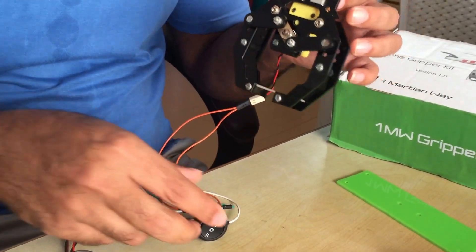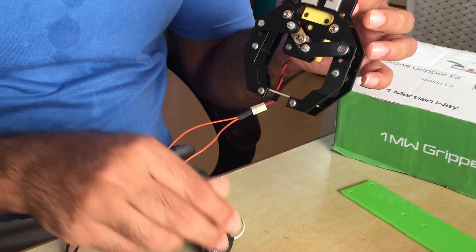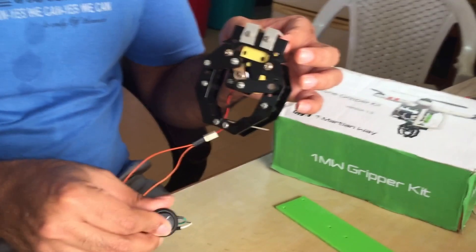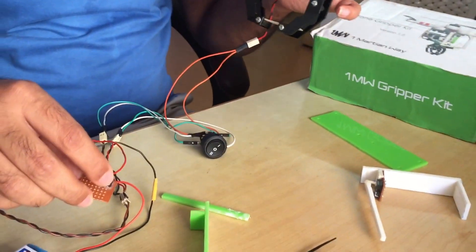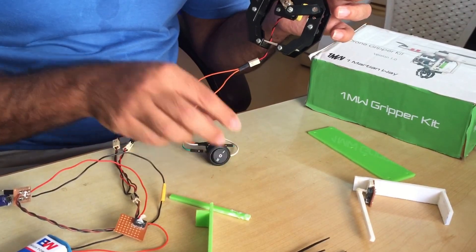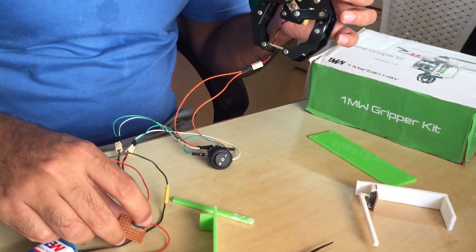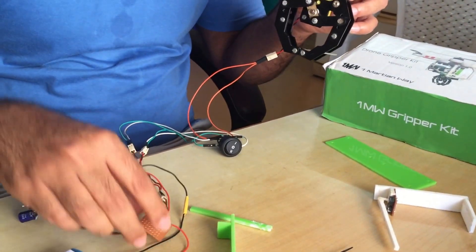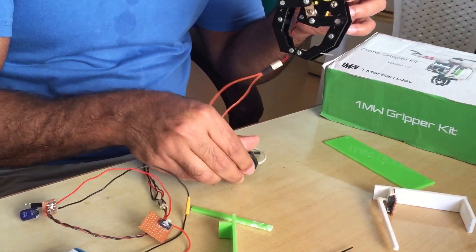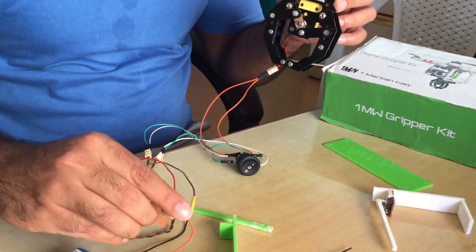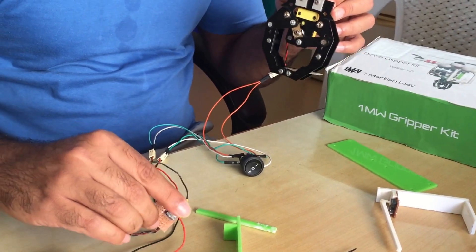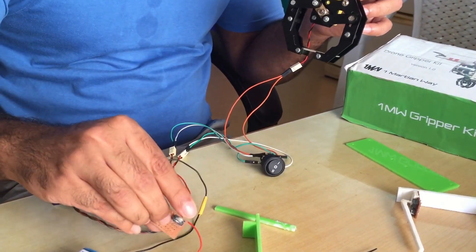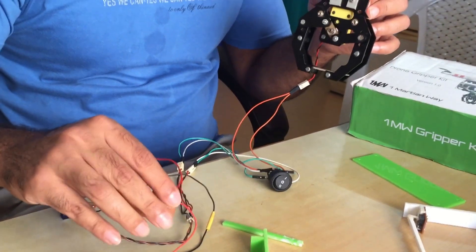Now we want to close the gripper again so it'll automatically close like that and open again. Move the switch again and it will close. Let's do this a few more times. Since it's on the desk I'm having some issue but it will open and then close.